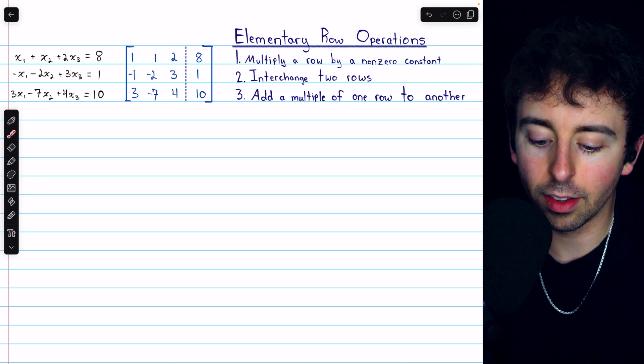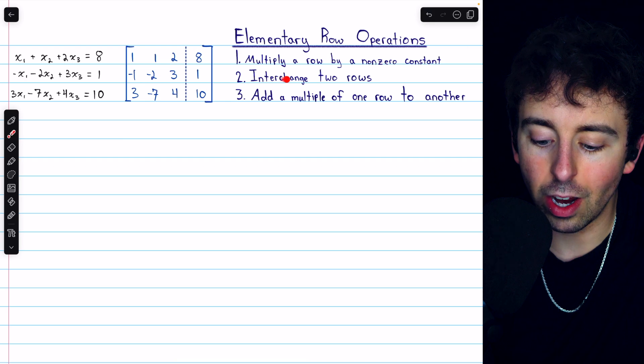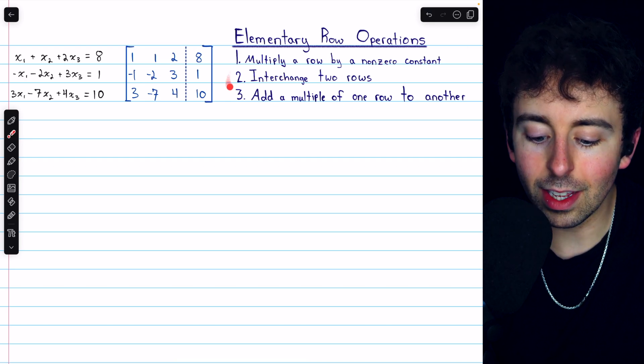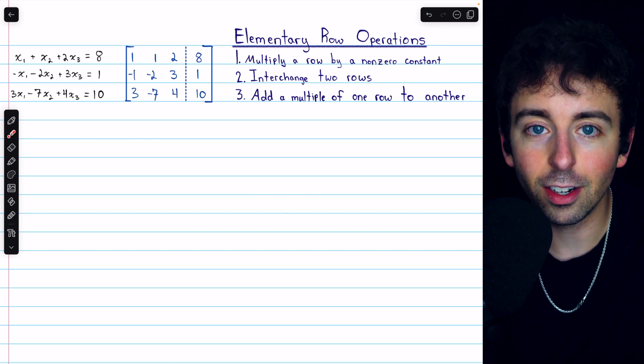We can multiply a row by a nonzero constant. We can interchange two rows. We can add a multiple of one row to another. Doing these things does not change the solution to the system.